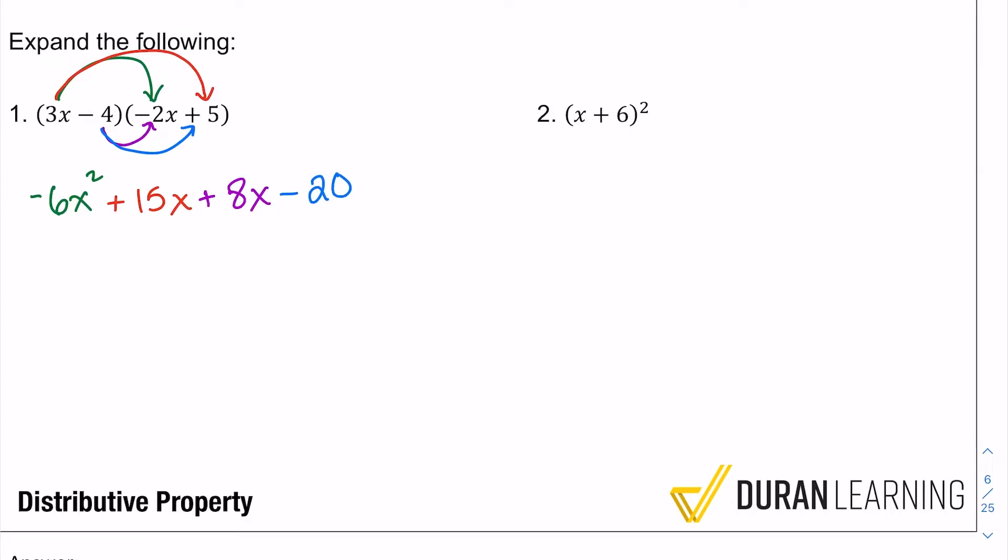So that's really it, guys. Just make sure that everything from one parenthesis multiplies with everything from the other. And from here all you got to do is combine like terms. So the first step was distribute.